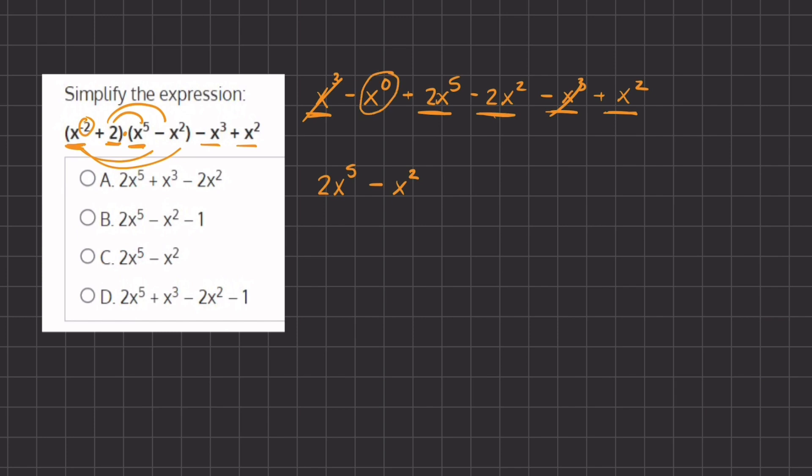And x to the power of 0 simplifies to 1. So we are left with negative 1. So this will be our final answer, which corresponds with answer B.